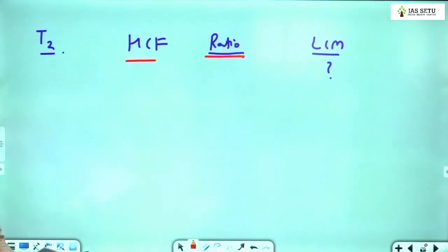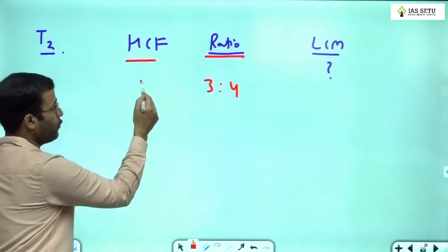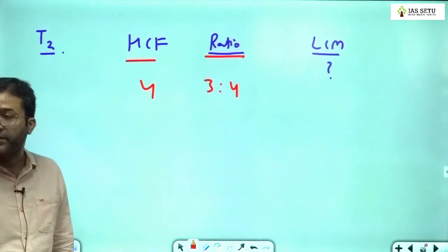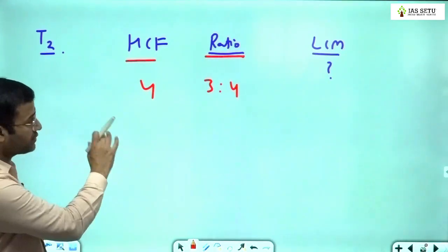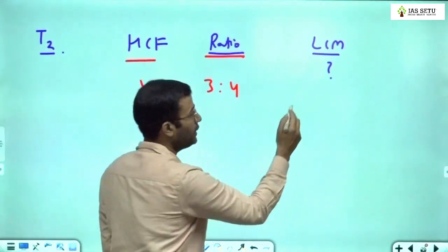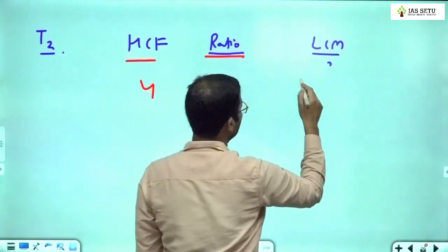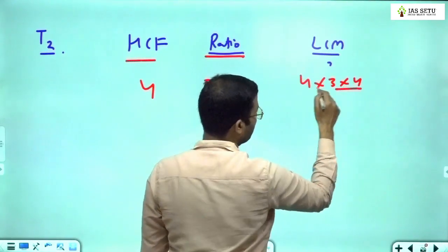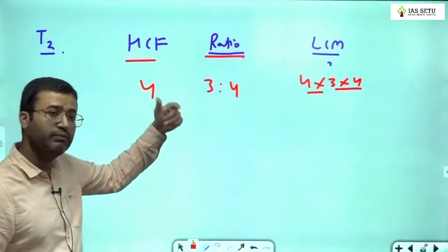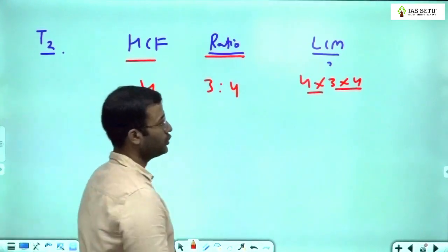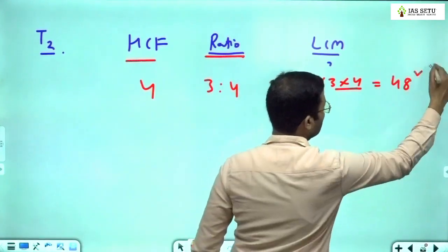Now question number 29: the ratio of two numbers is 3:4 and the HCF is 4. They ask what is the LCM. Direct shortcut is when HCF given, ratio given, LCM is multiplication of HCF and ratio. So your LCM will be 4 × 3 × 4. Multiply this HCF with the multiplication of ratio. This is 48, this is your direct answer.